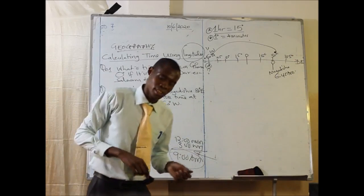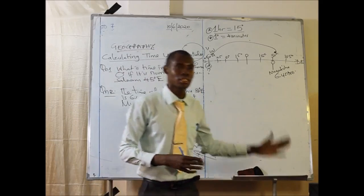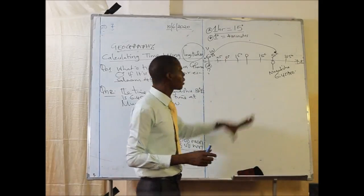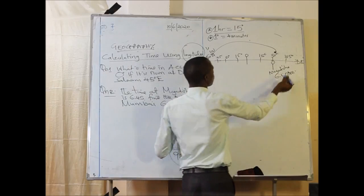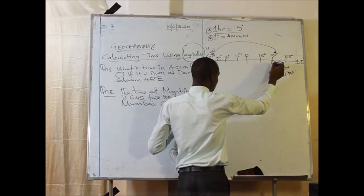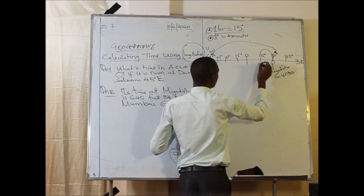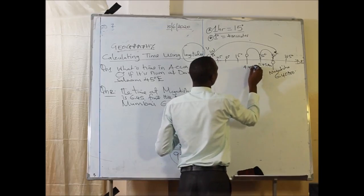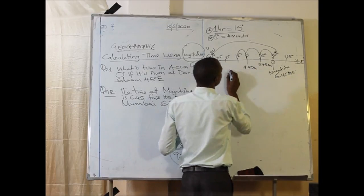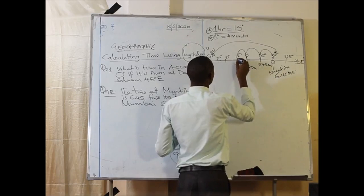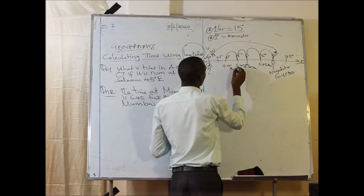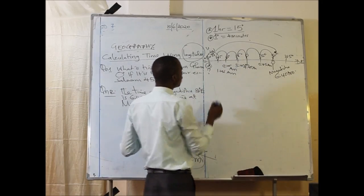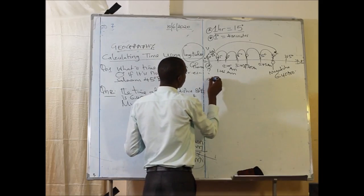When moving from east towards west, we lose time. Starting at 6:45 AM at Mogadishu, moving one step (15 degrees) gives 5:45 AM, then 4:45 AM, then 3:45 AM, then 2:45 AM, then 1:45 AM, and then 12:45. We now need to identify whether that will be AM or PM.